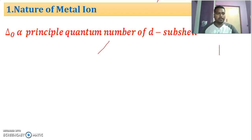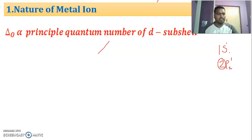For example, if you write 1s¹ or 2px¹, here 2 is the principal quantum number. This principal quantum number indicates the main energy level. In case of 1s, the principal quantum number is 1; in case of 2s, the principal quantum number is 2.